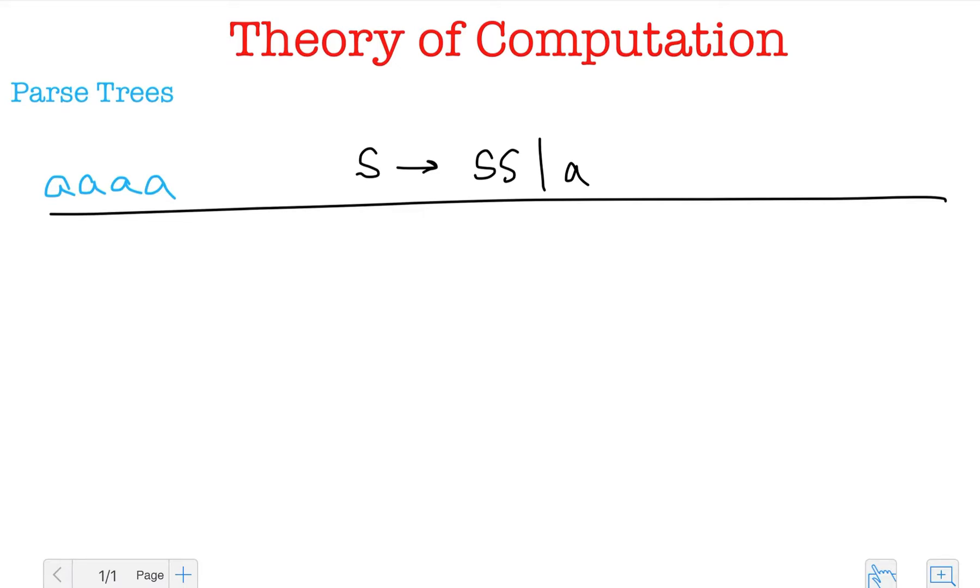So what the leftmost derivation means is that at every step I will always expand the leftmost non-terminal. So I'm starting off with the start symbol S, and what I do is because I have only one, I go to SS and here what I do is I take this S and I expand that.